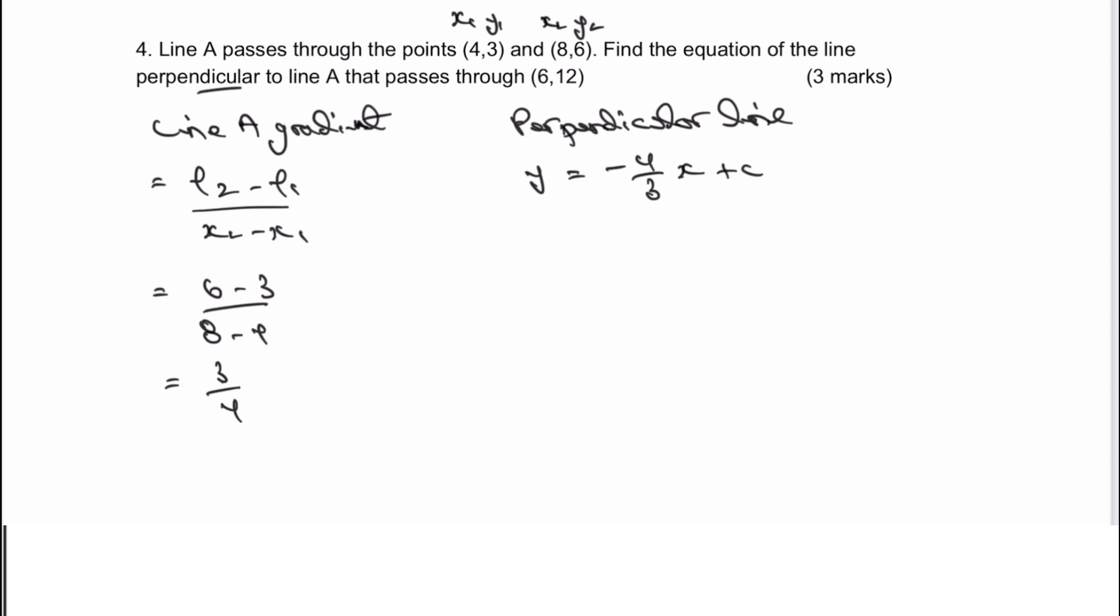And then really all we're going to do is take the values of y and x that we've been given for the new perpendicular line, put them straight in, and that will give us the value of c. So I've got y is going to be 12 equals minus 4 over 3 multiplied by 6, which is the value of x plus c. So I've got 12 equals minus 8 plus c. So therefore, c must equal 20.